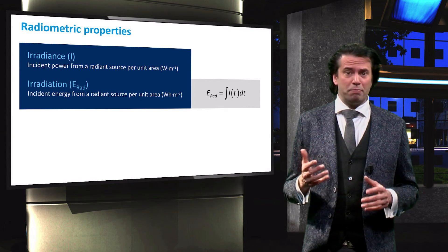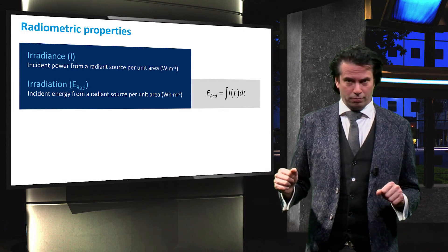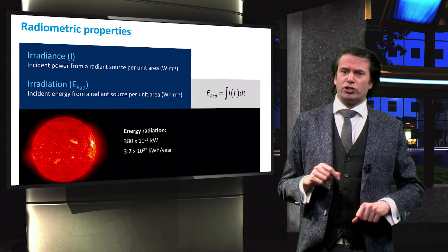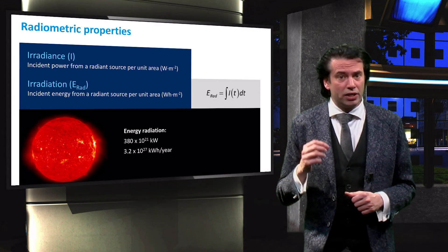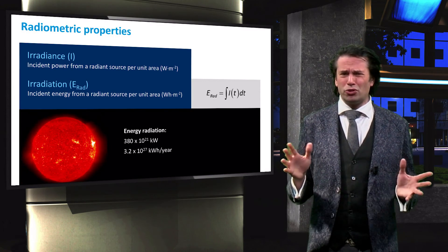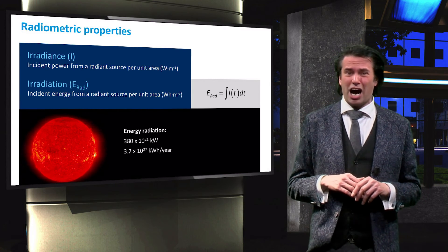The power emitted by the sun amounts to about 380 times 10 to the power 21 kW, which amounts to about 3.2 times 10 to the power 27 kWh per year.